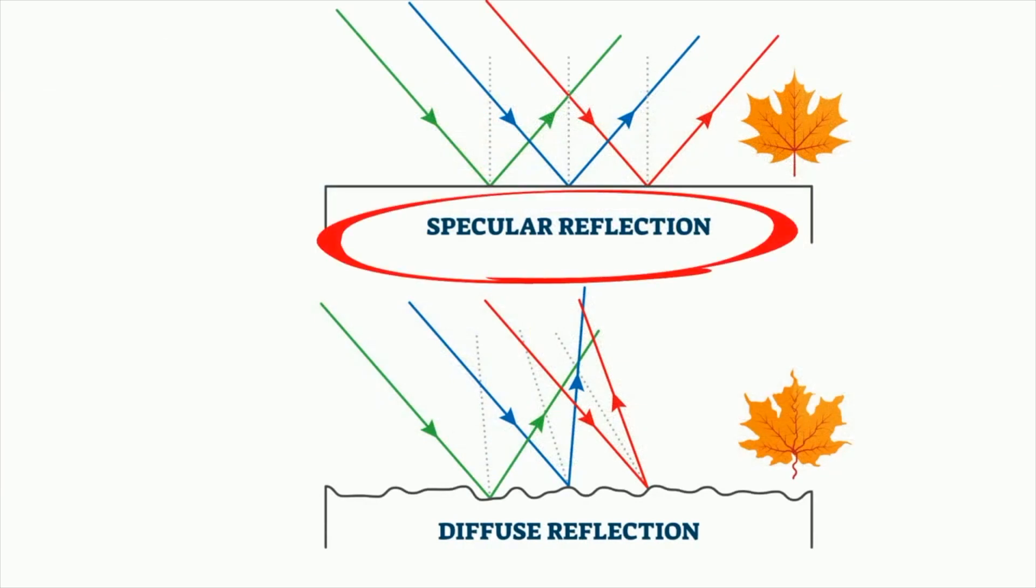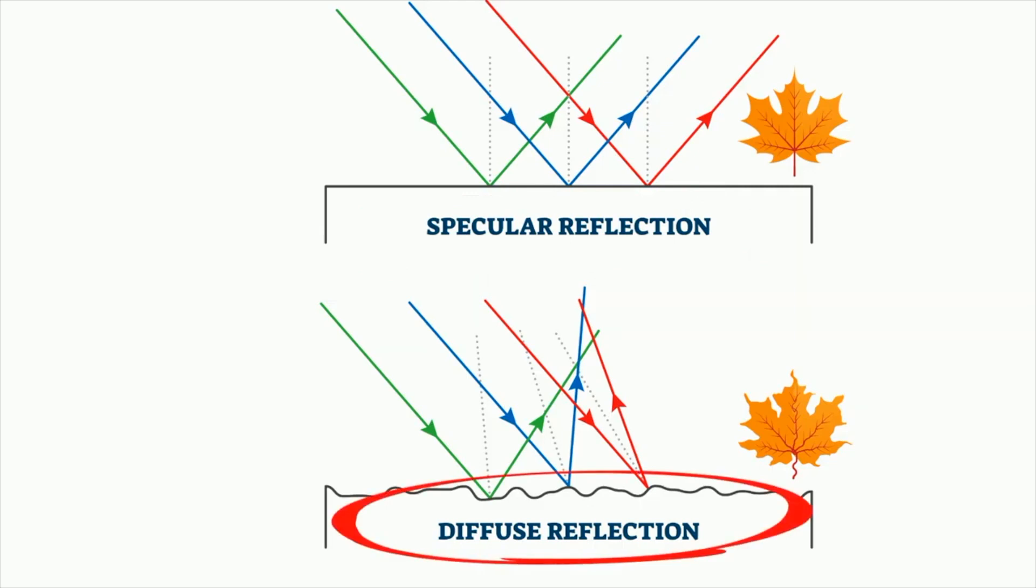Specular reflection reflects all light which arrives from a given direction at the same angle, where diffuse reflection reflects light in many different directions.